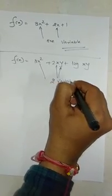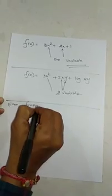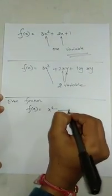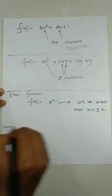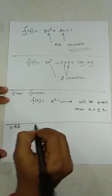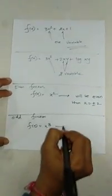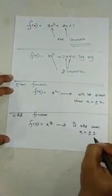two variable function. And next thing is when you can say this is even function. So f(x) = x² and it will be even when x = ±2, so this we call it as an even function. And the last thing is odd function, so f(x) = x³. It is odd when x = ±1. So this is nothing but just the introduction of function.